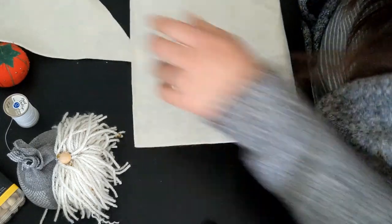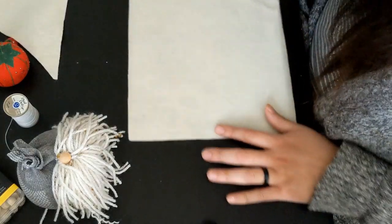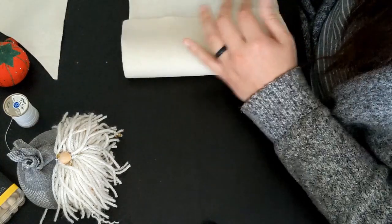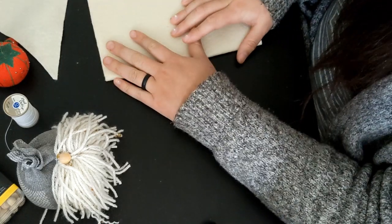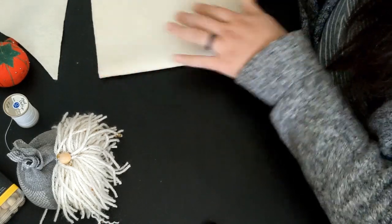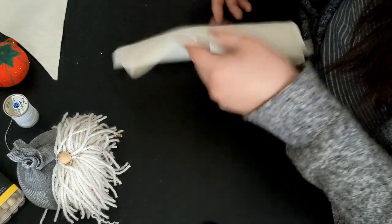All right, so I'm going to take a piece of my felt and I'm going to fold it this way. This piece of fabric is about eight and a half by eleven, it looks like a sheet of paper.